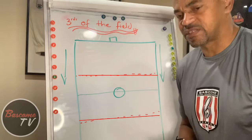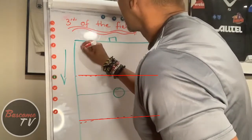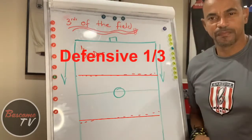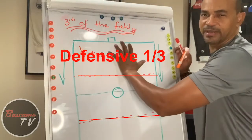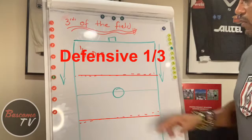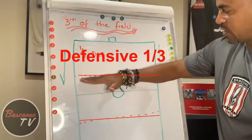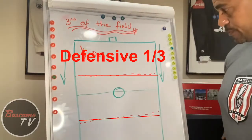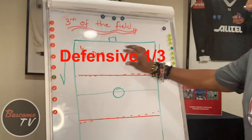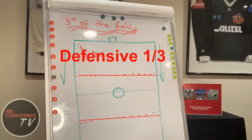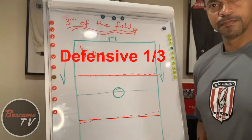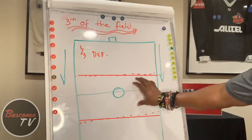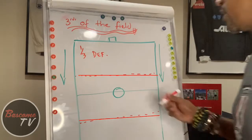If you said 'defensive third,' you are correct! This third is my defensive third — this is my defensive area, this is the area where we defend. Our second third is going to be between the red lines. We've got our defensive third — so what would this next third of the field be? If you said 'midfield third,' then you are correct.